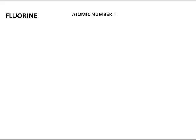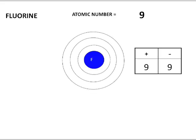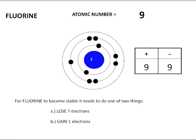Now let's look at the opposite end of the periodic table. Fluorine has an atomic number of nine, which means nine positives and nine negatives. Starting with the symbol F, we need nine electrons: two in the first shell and seven in the final shell, for a total of nine. For fluorine to become stable, it can either lose those seven electrons or gain one electron, and most likely it will gain an electron.